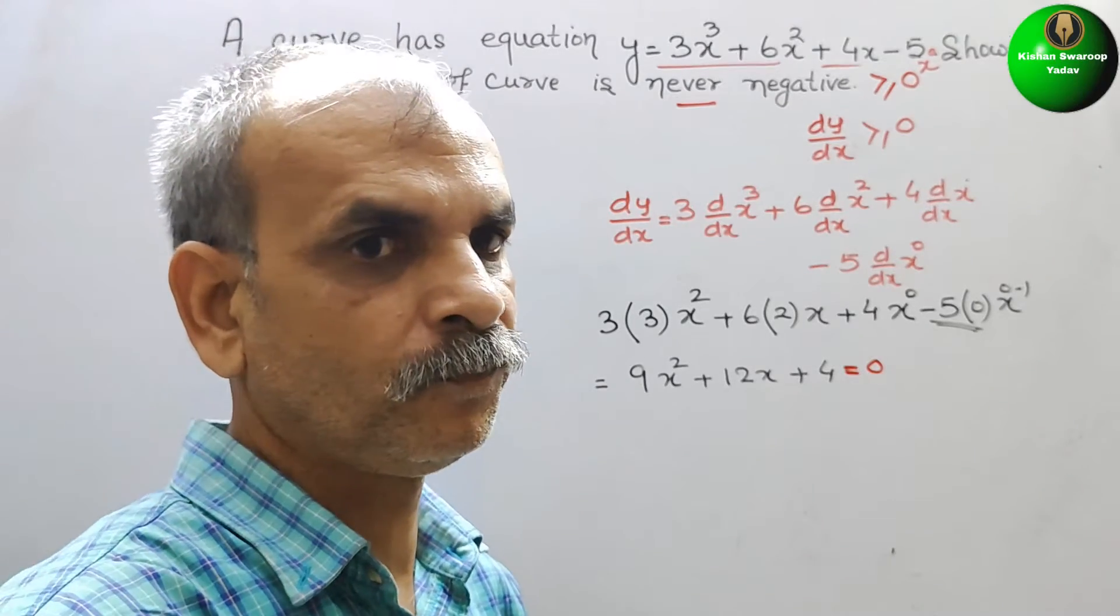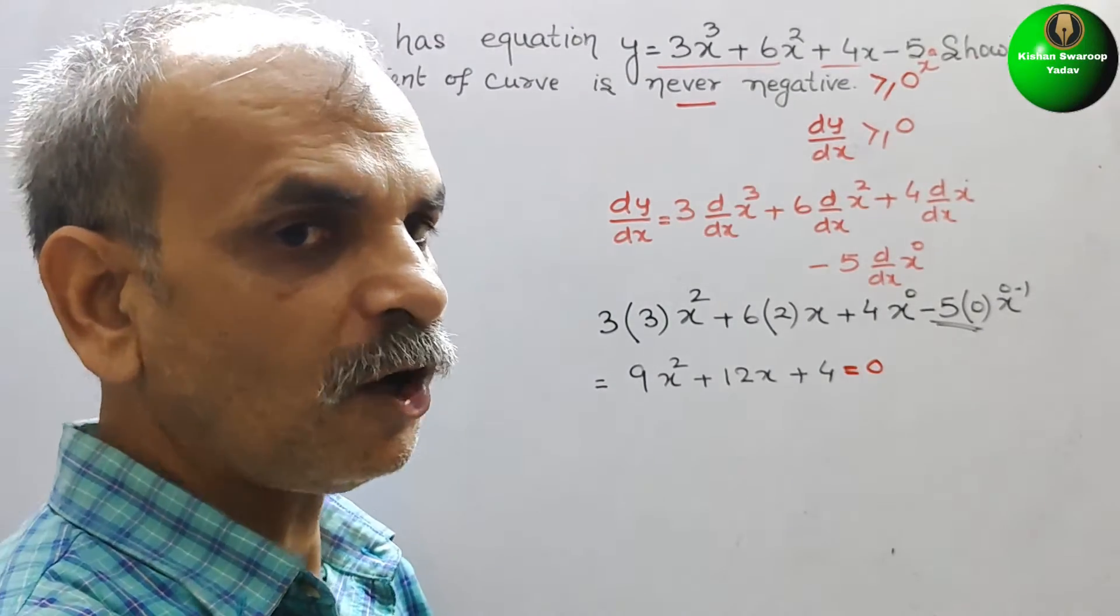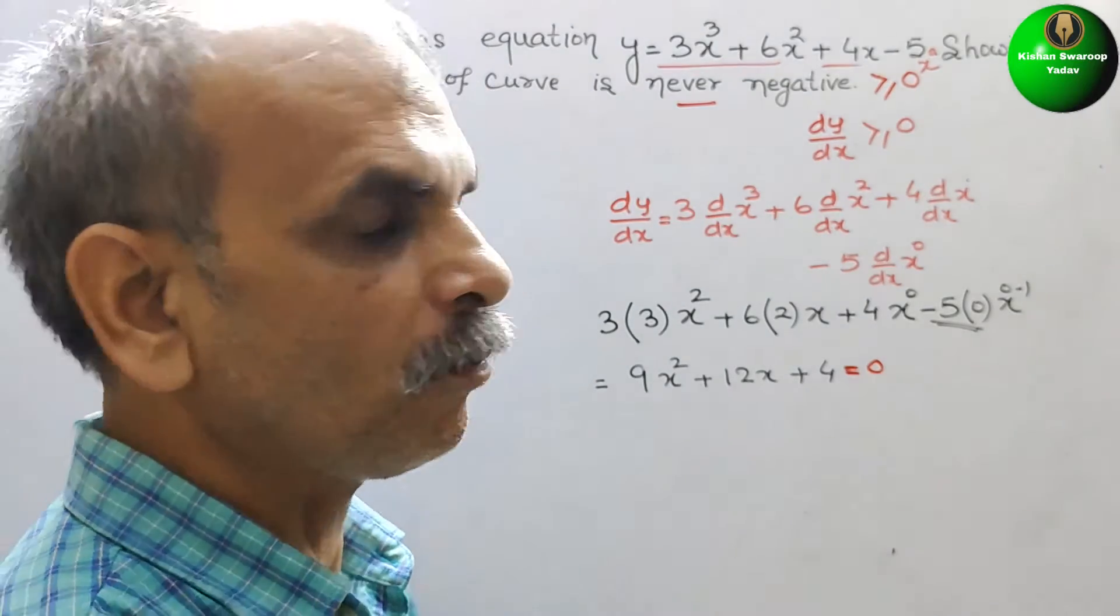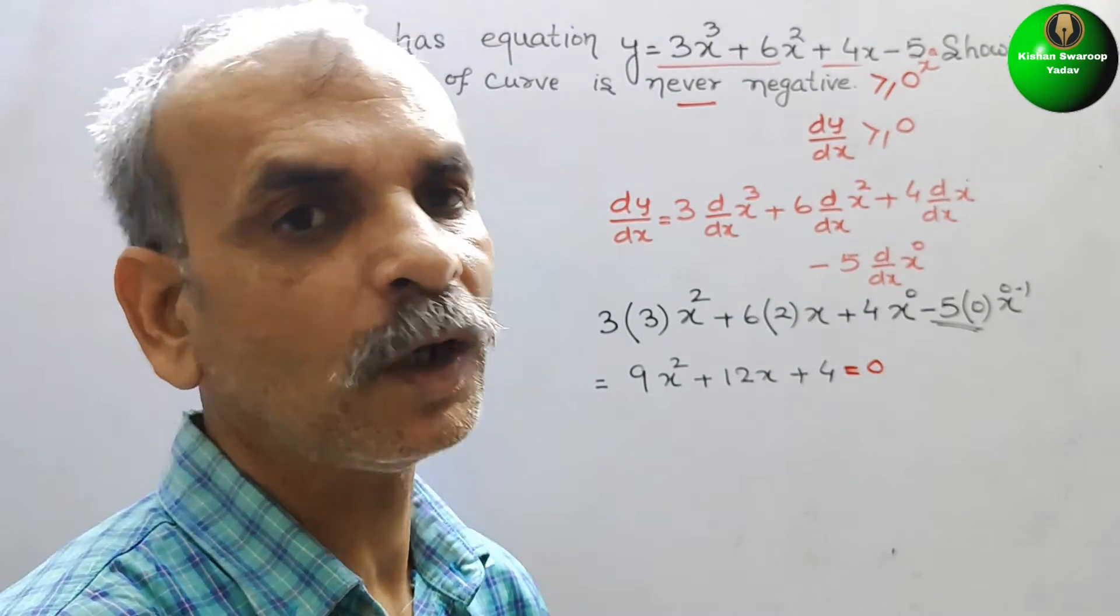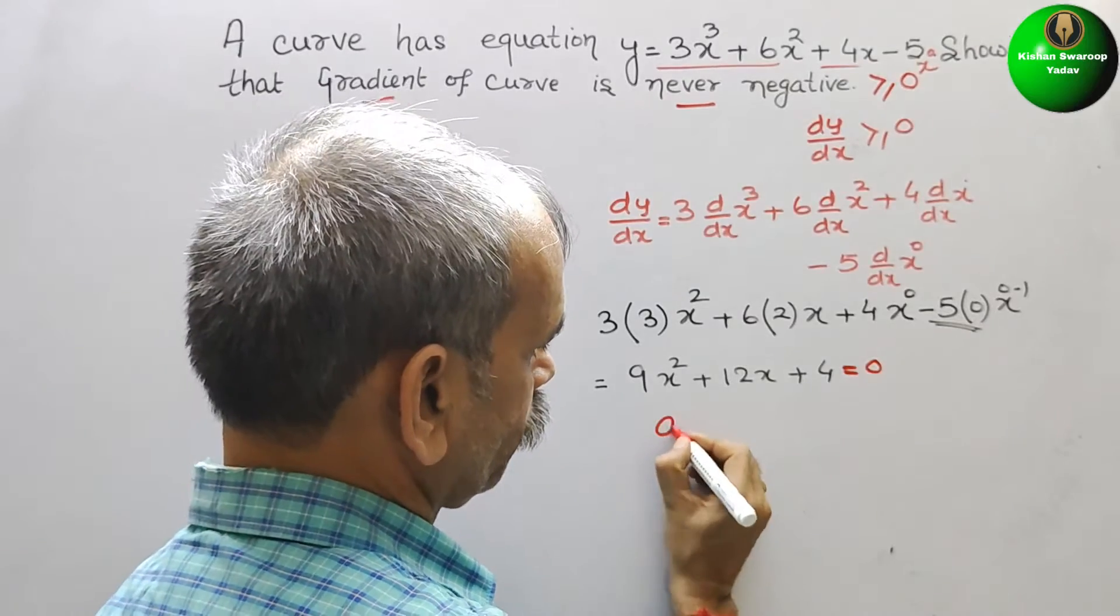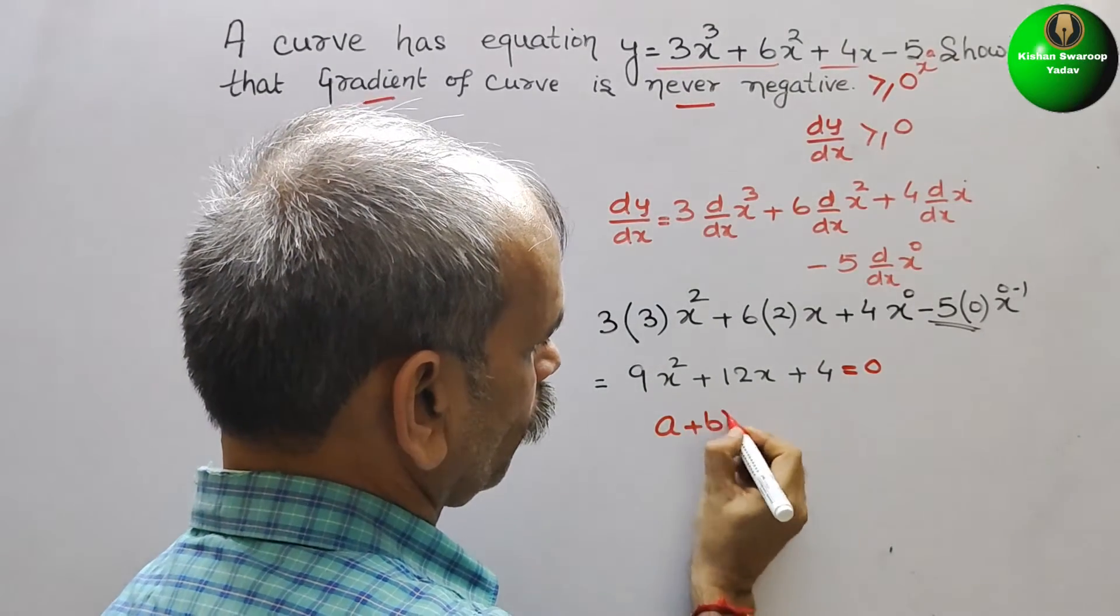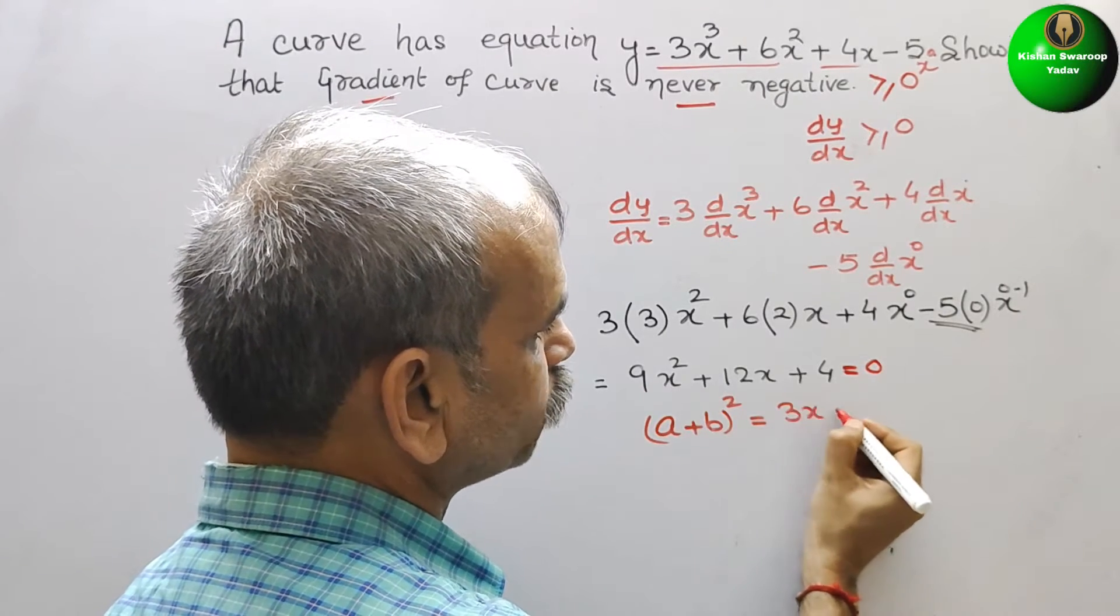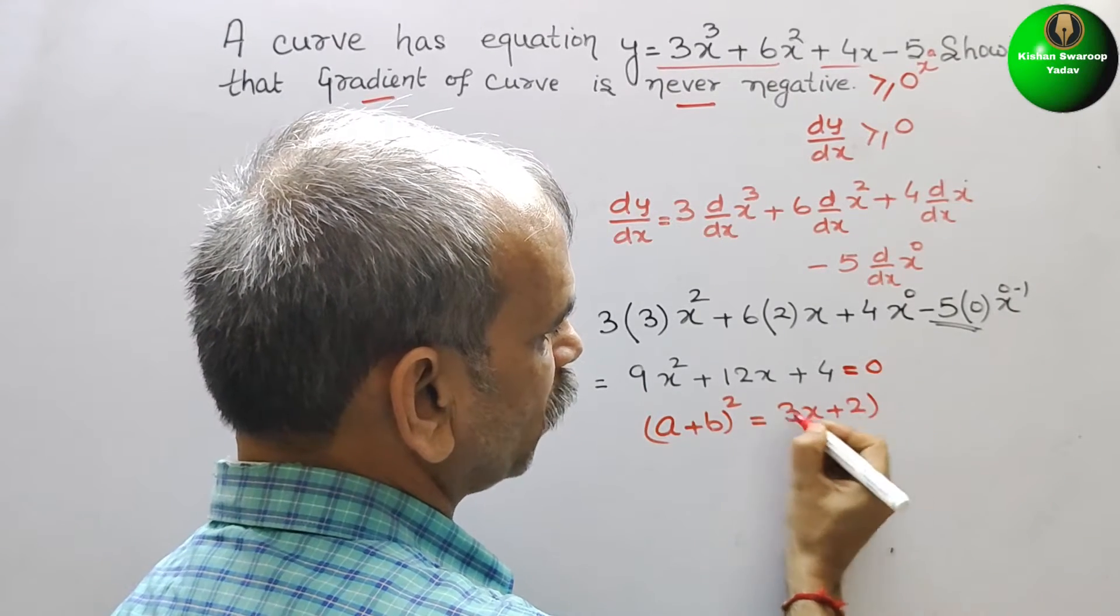Now solve this. If we solve this or if we see this, it is in the form of a + b whole square. That is (3x + 2)².